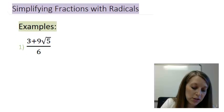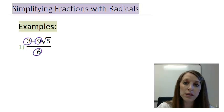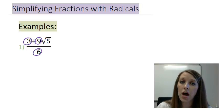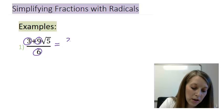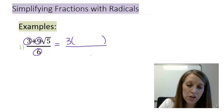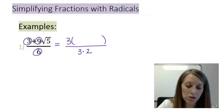If we look at all of the coefficients here, the 3, the 9, the 6, we notice that they all have a common factor of 3 in them. So what we can do is we can factor 3 out from all of those pieces. So let me factor out a 3 from the numerator. And in the denominator, I'm just going to write 6 as 3 times 2.